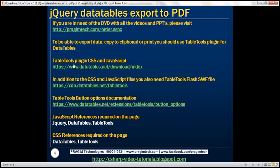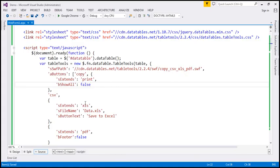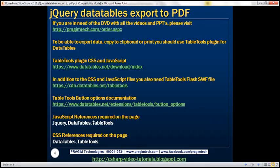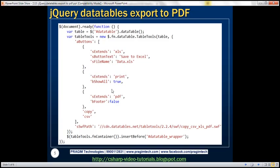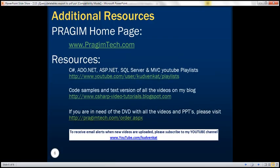So to summarize: the Table Tools plugin CSS and JavaScript CDN links can be found at this URL. In addition to that CSS and JavaScript, you also need the Table Tools Flash SWF file, available from this URL. The Table Tools button options documentation — covering sExtends, sFileName, sButtonText, and all options you can use with these buttons — can be found at this URL, and I'll have all these links available on my blog. The required JavaScript references on your page are jQuery itself, DataTables, and Table Tools, plus the DataTables and Table Tools CSS files. Thank you for listening and have a great day.